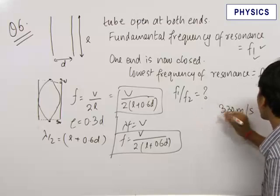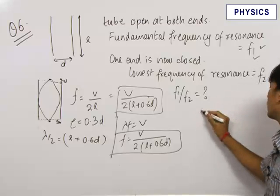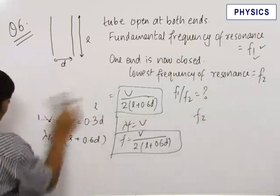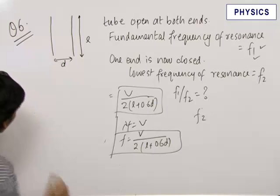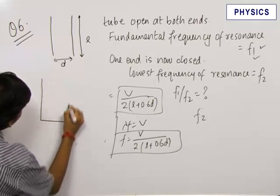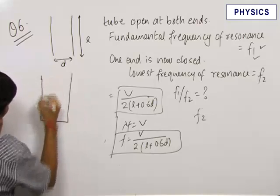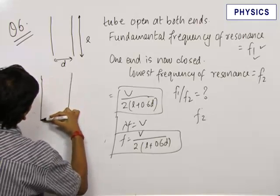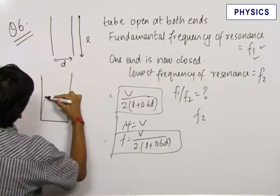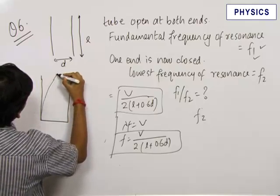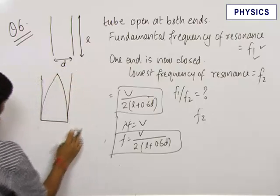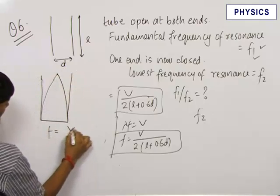For F2, when one of the ends is closed, we have a tube like this. This point acts as a pressure antinode. For the lowest frequency of vibration, we will have a node at this point. The first node will come at this point, and we know that frequency is equal to V upon 4L.